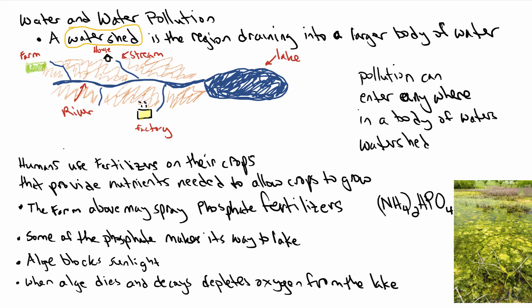First, let's talk about the farm. Humans use fertilizers on their crops to provide nutrients needed for crops to grow. The farm may spray phosphate fertilizers — here I've shown ammonium phosphate — and some of those phosphates may run off from the farm into the stream, then the river, then the lake. This can cause what's called an algae bloom, shown here as green algae growing on top of a pond, which blocks sunlight.